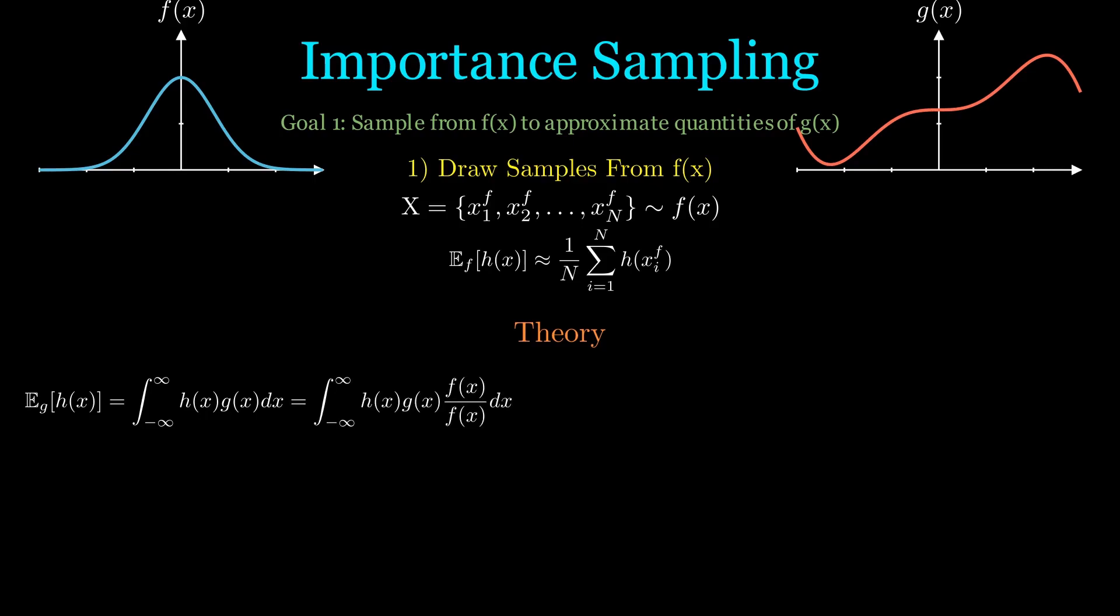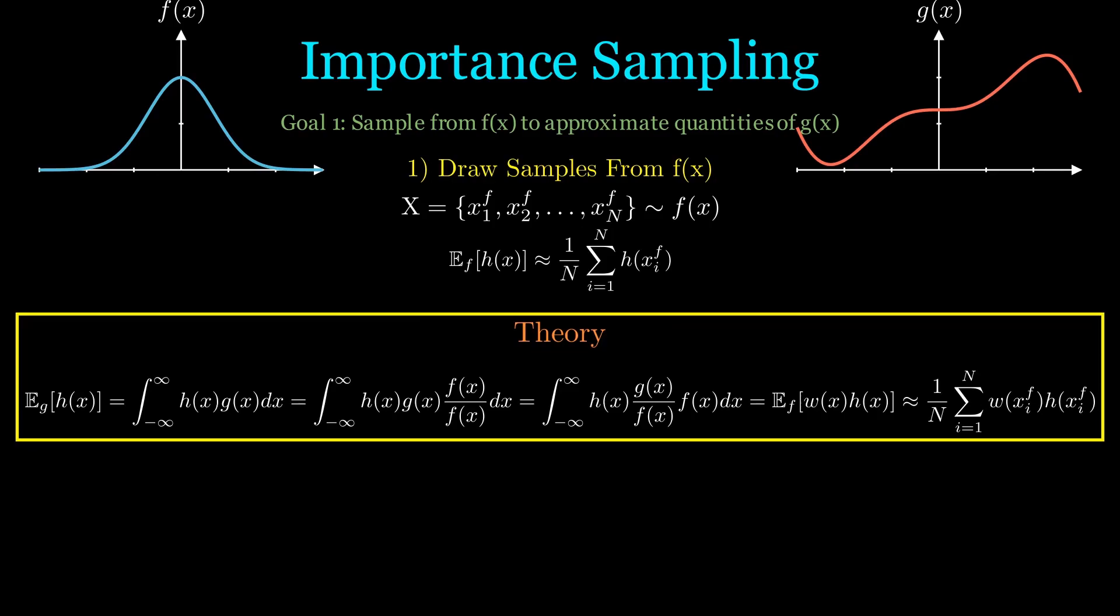We can insert f(x) over f(x) because it's equal to 1. Then we rearrange and define w(x) to be g(x) over f(x). Now we have an expectation with respect to f, and this quantity is approximately equal to the summation with samples drawn from f. This simple manipulation leads to very powerful results.